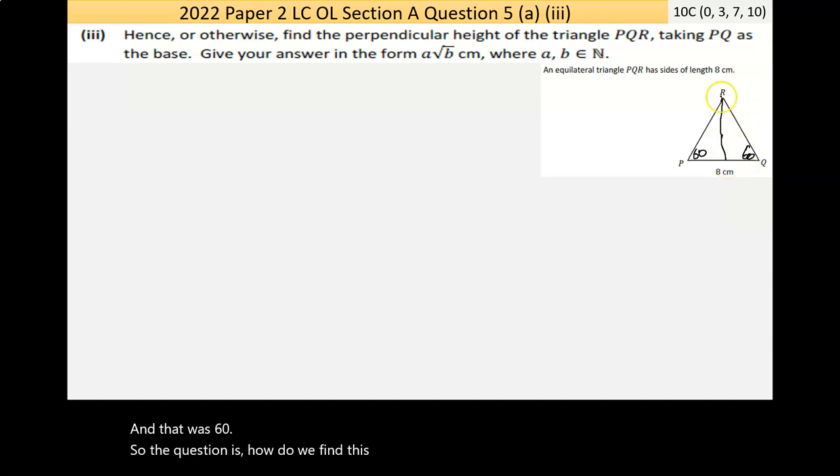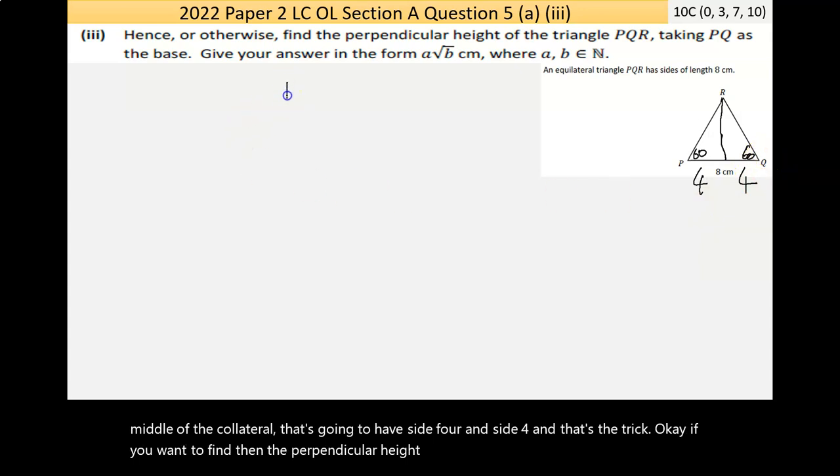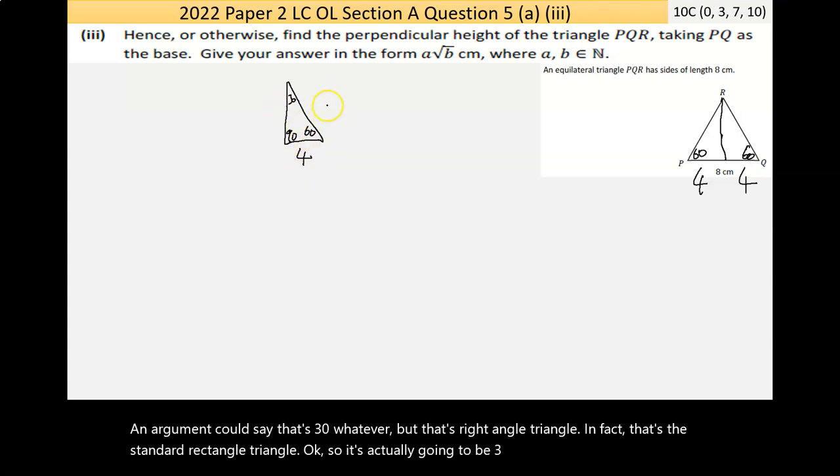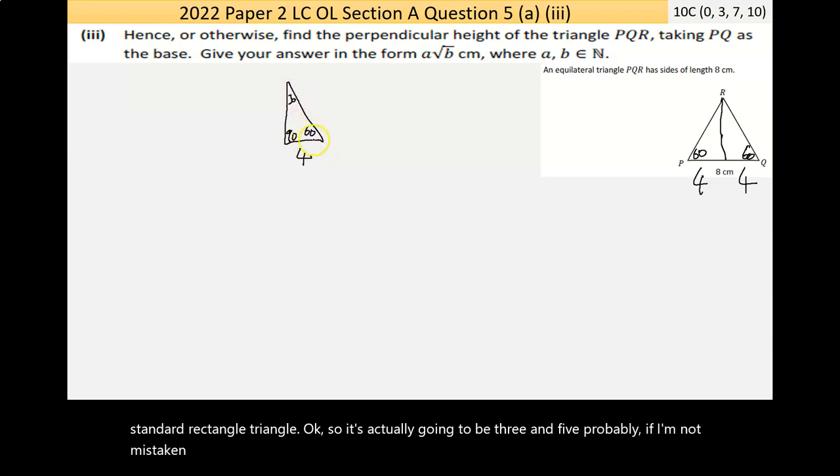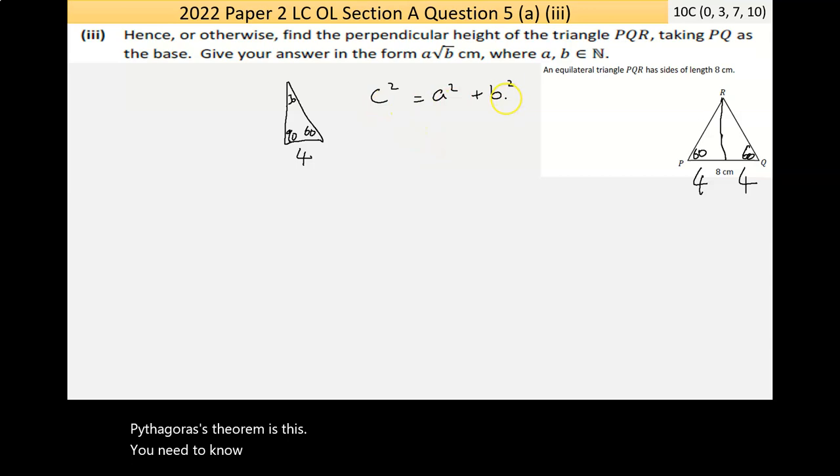If you want to find the perpendicular height, if you think of taking this triangle here, that's 4, 60, 90. Now arguably you could say that's 30, whatever. But that's a standard triangle. It's actually going to be 3 and 5 probably, if I'm not mistaken. Now it's not drawn to scale, but I'm going to try to use the trigonometric ratios here. I don't have enough information for Pythagoras. Just to remind ourselves that Pythagoras' theorem is this - you need to know 2 of the 3 sides to be able to use Pythagoras. So it's not Pythagoras. Now it's going to be most likely the trigonometric ratios.